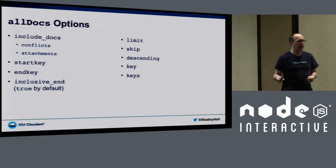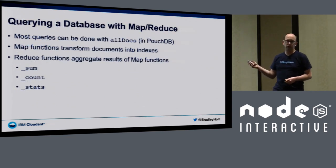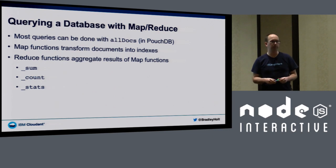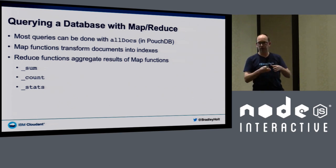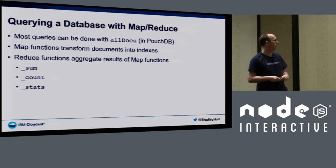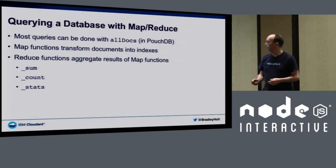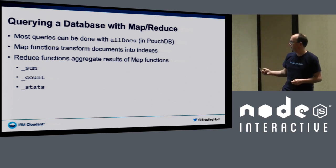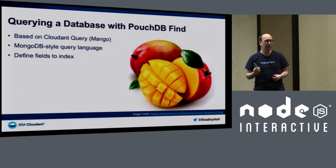If you need to query against something other than the `_id` field, you can create secondary indexes. One way is by writing MapReduce views — a JavaScript map function that goes through all the documents in your database and creates a secondary index. You can then query against that index, and optionally add a reduce for aggregations like counts or stats. If you don't want to deal with MapReduce, a simpler option is the PouchDB Find plugin — an open-source plugin for PouchDB.